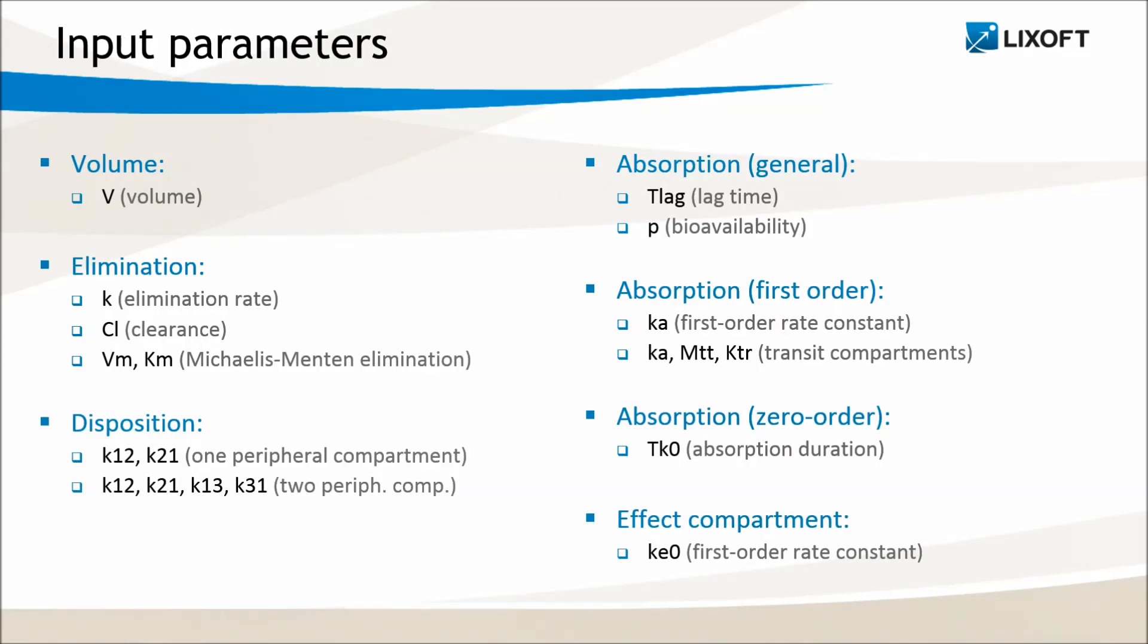Let me now show you all recognized input parameters for the PKModel macro. The first one is V, the volume of the central compartment. To describe the elimination, I can use either k, the elimination rate, or Cl, the clearance.